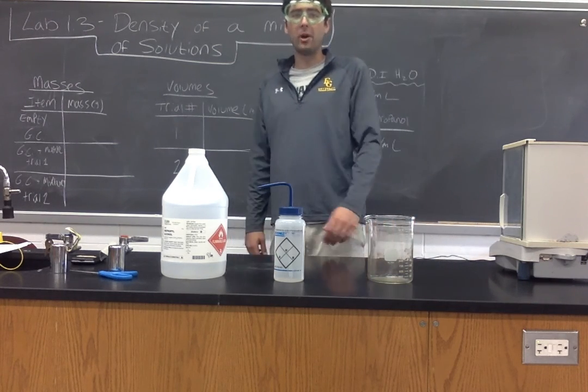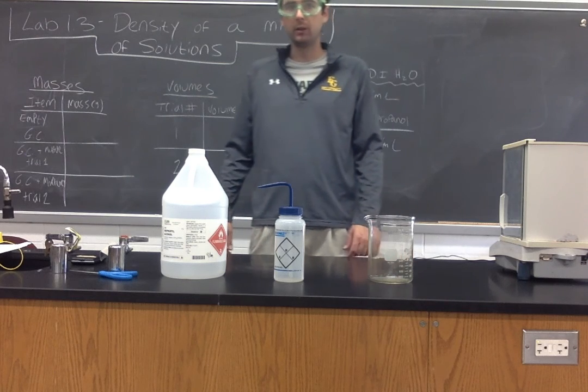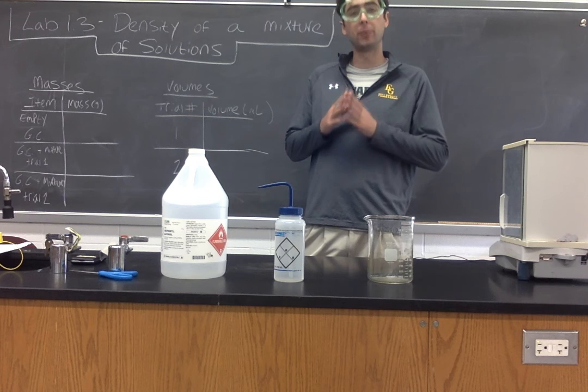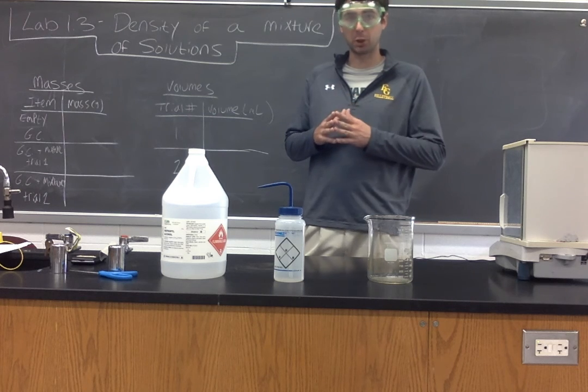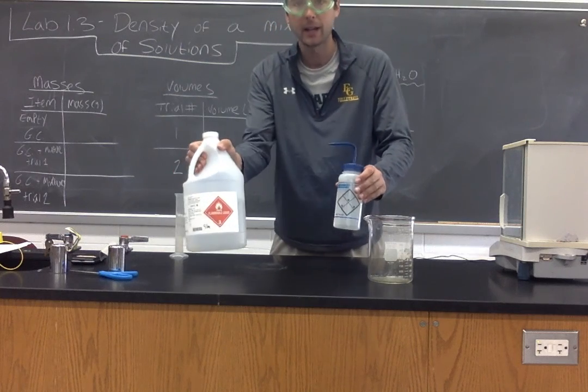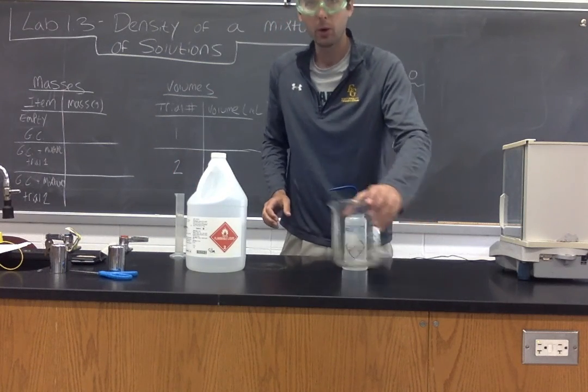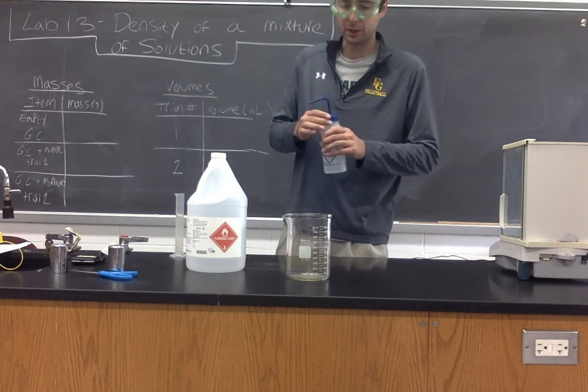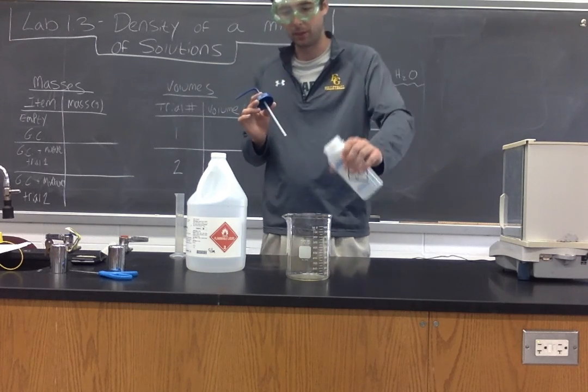Hi everyone, this is Lab 1.3. We will be using the property of density to find out the percentage breakdown of a mixture. What I have here on the front desk is deionized water and isopropyl alcohol. I am going to make a mixture of these two solutions by just pouring them into this large beaker.